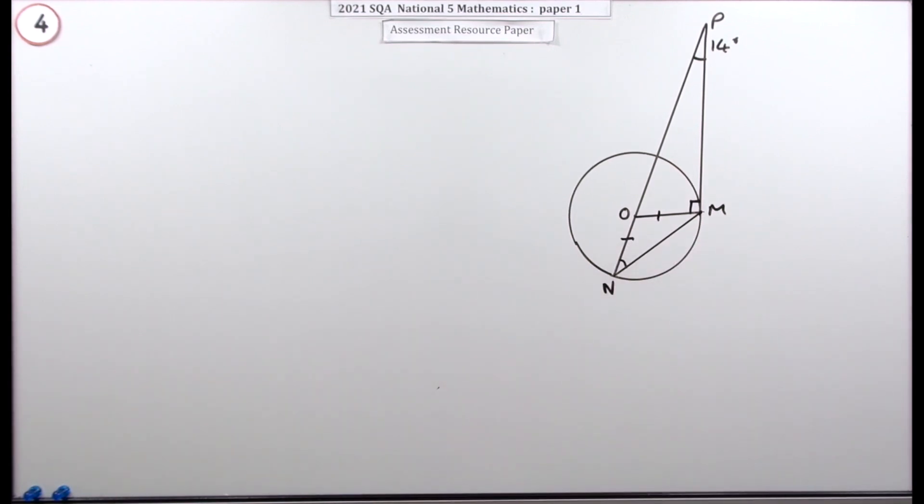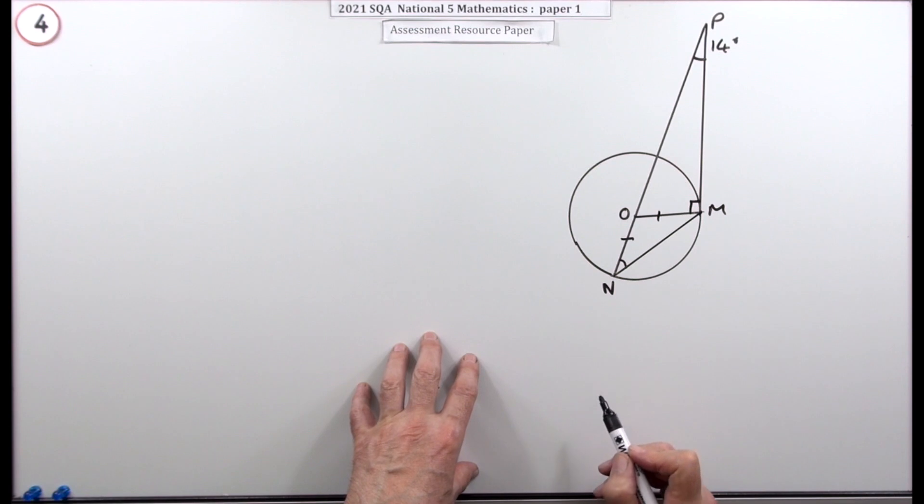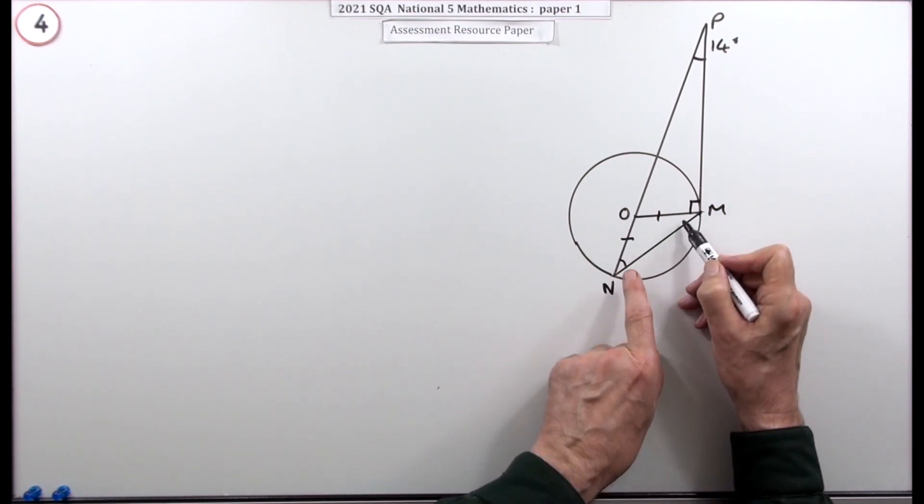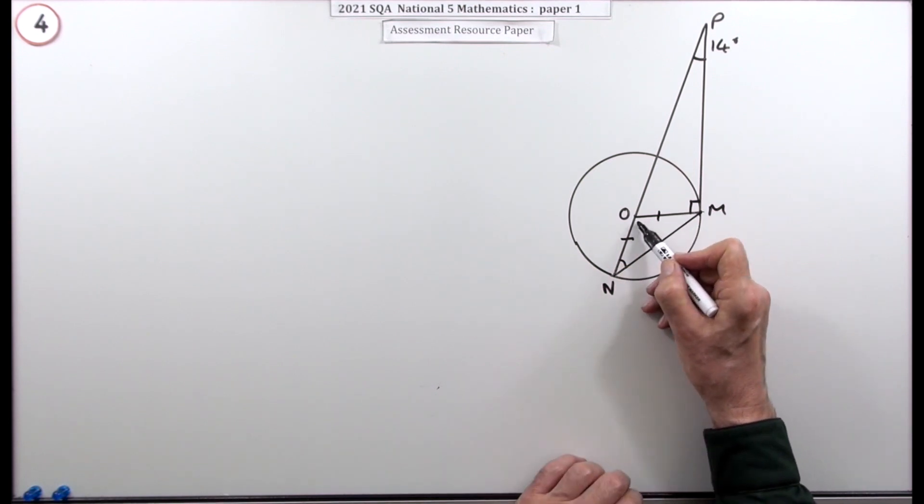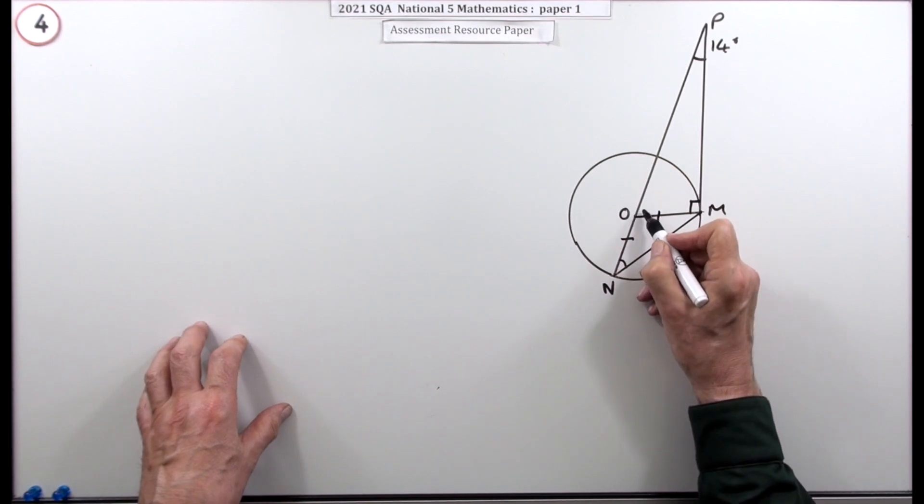You've got a right angle triangle. Then in here, that's a radius and that's a radius, so that's an isosceles triangle. You know that these two angles must add up to 90 because you've got 90 already. In this one, these two angles must be the same.